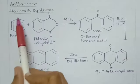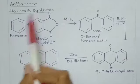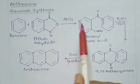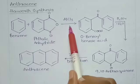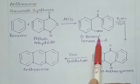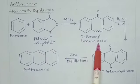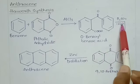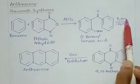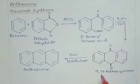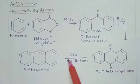The next reaction is Haworth synthesis. When benzene reacts with phthalic anhydride in the presence of AlCl3, it produces ortho-benzoylbenzoic acid, which undergoes a ring-closure reaction in the presence of H2SO4 to produce 9,10-anthraquinone, liberating a water moiety.